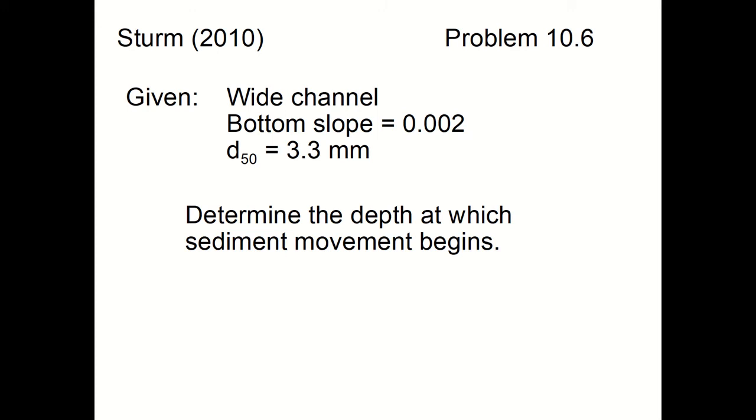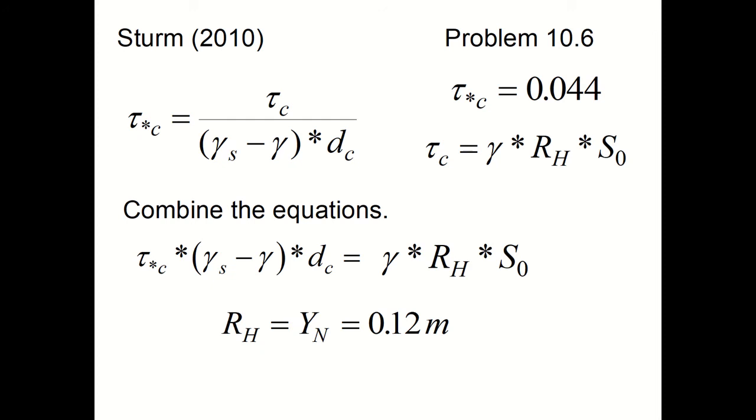It says determine the depth at which sediment movement begins. As I mentioned, for the wide channel the hydraulic radius is equal to the normal depth. So the formula for the dimensionless critical shear stress tau star c is equal to tau sub c, which is the critical shear stress, divided by the difference between the specific weight of the sediment minus the specific weight of the water times the critical particle diameter.